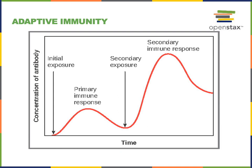This is how vaccinations work. In a vaccination, you are given an initial exposure to the antigen using an inactivated form of a virus — or an inactivated antigen from a bacterial cell — to stimulate the primary immune response. Then, if you are exposed to that virus in the future, the secondary immune response should be able to prevent you from developing any symptoms of infection.